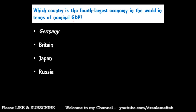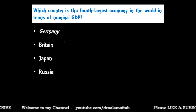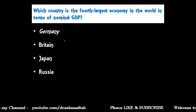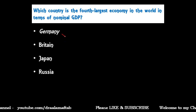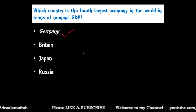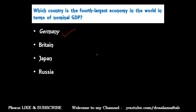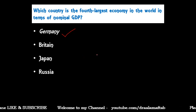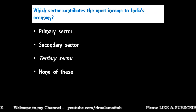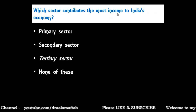Next question: Which country is the fourth largest economy in the world in terms of nominal GDP? Options are: Germany, Britain, Japan, or Russia. The correct answer is Germany, which is the fourth largest economy in the world on nominal GDP basis.